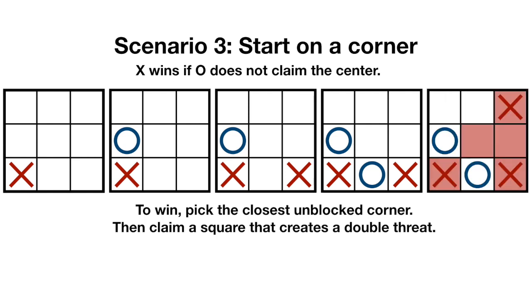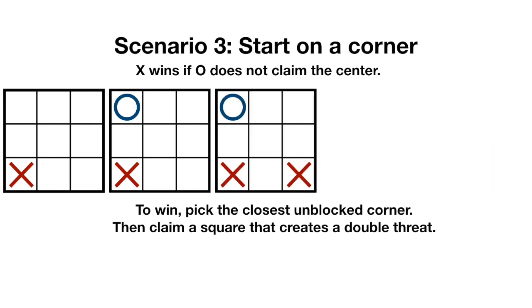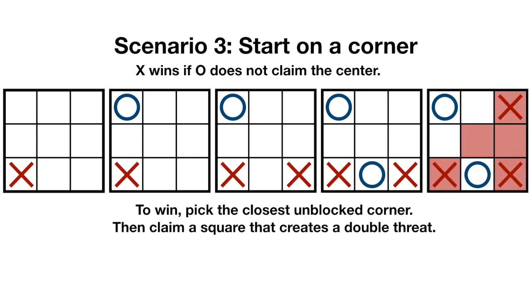There will always be a double threat that you can create. Here, O picks the near corner, x responds by choosing the closest available corner, O parries the threat, and then x creates a double threat, winning the game.